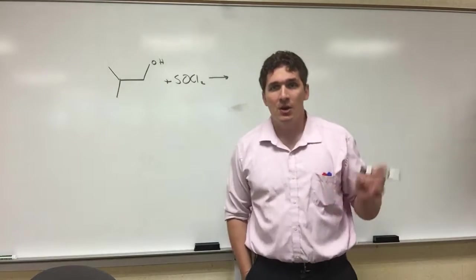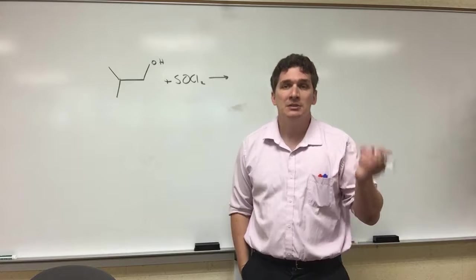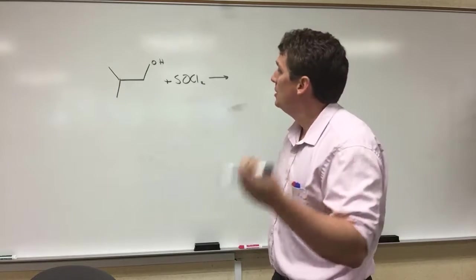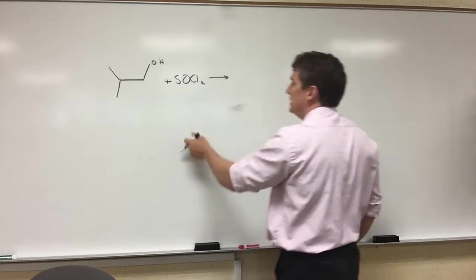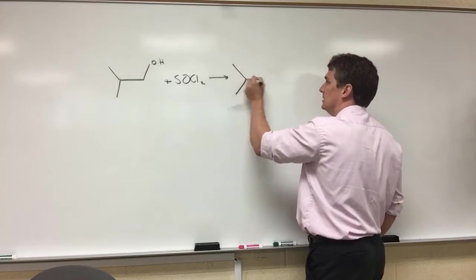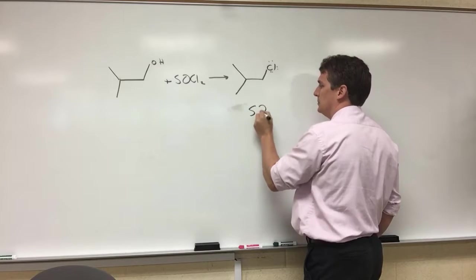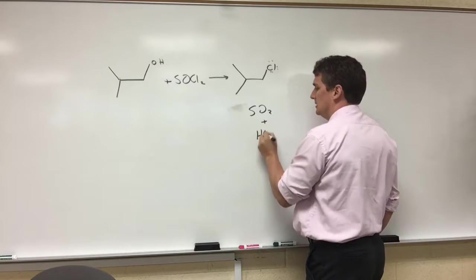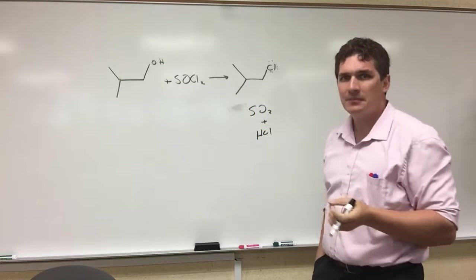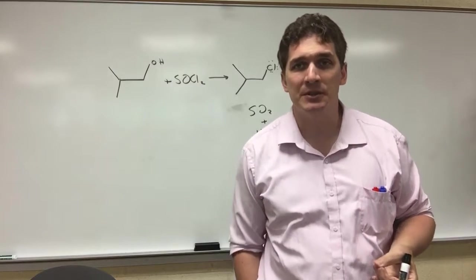But we're not going to go through a carbocation intermediate, which means that we're not going to get rearrangement. So overall, the reaction we get with thionyl chloride is we take our alcohol, we add a chloride, we get SO2 and HCl. So this is the end result of running this reaction.